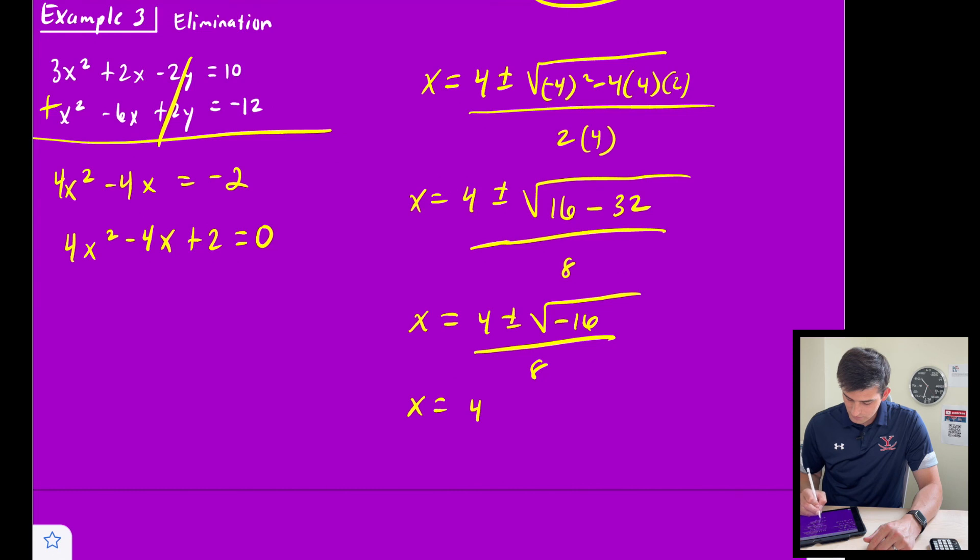So x = 4 ± √(-16). We could write that as √16 times √(-1). So 4i divided by 8.